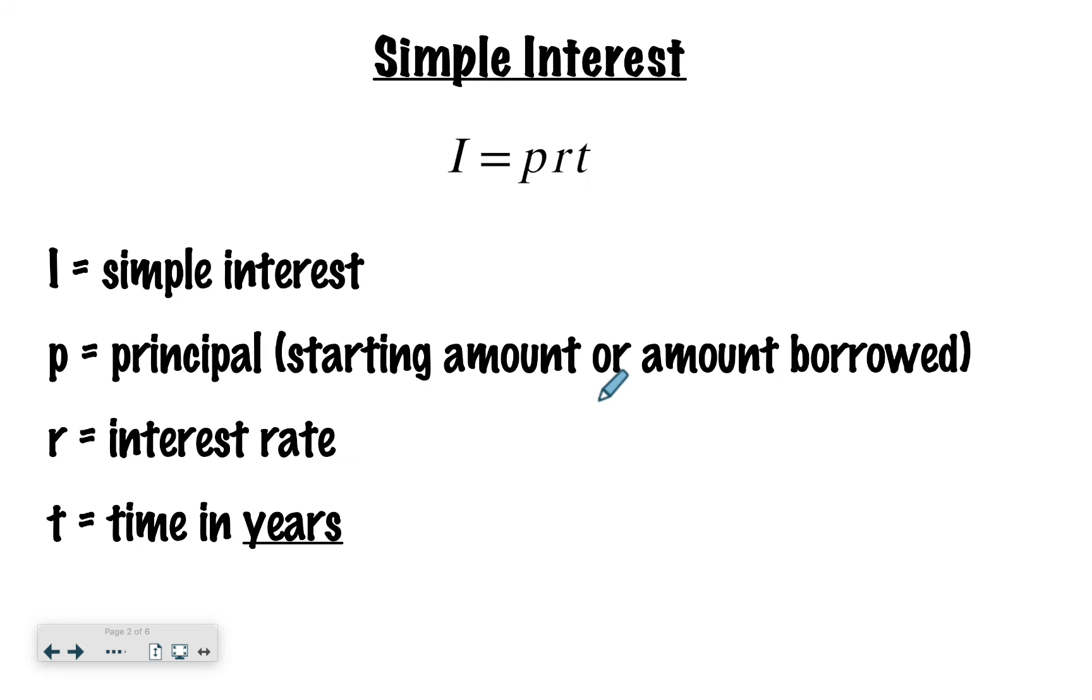So this is called simple interest. There are multiple other types of interest that you can work with, but today we're just going to look at simple interest. So the equation for it is I, a capital I, equals PRT. I represents whatever that interest amount is, how much extra you either owe or how much money you have earned.